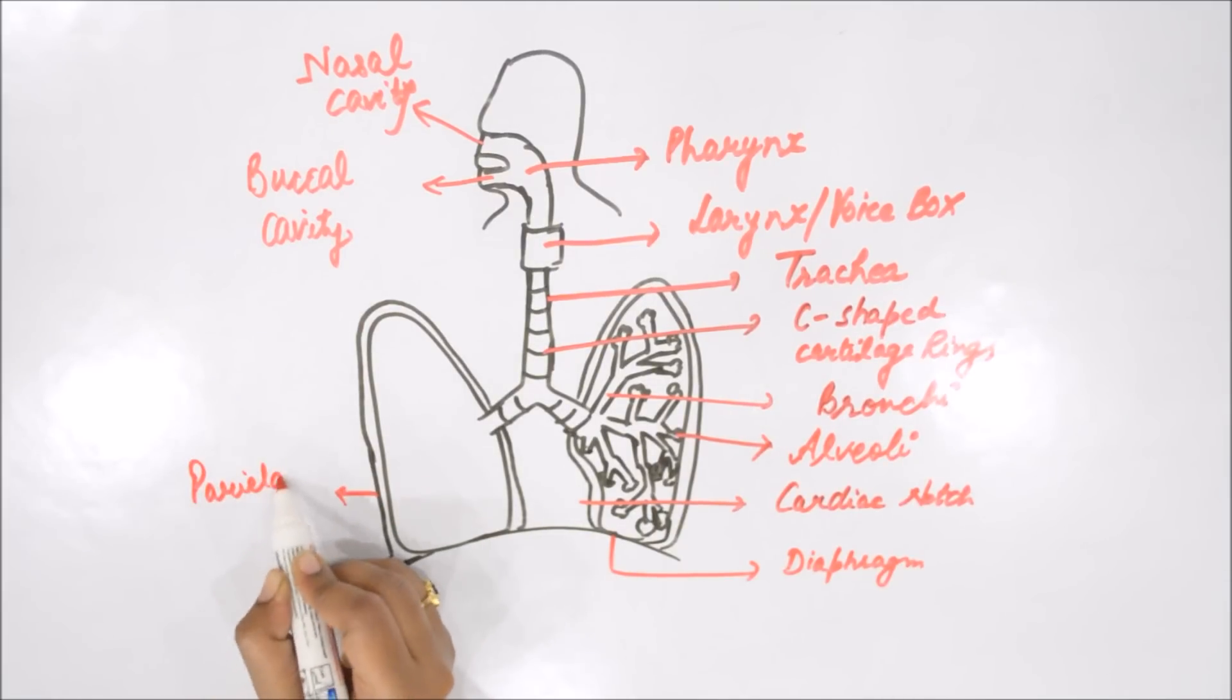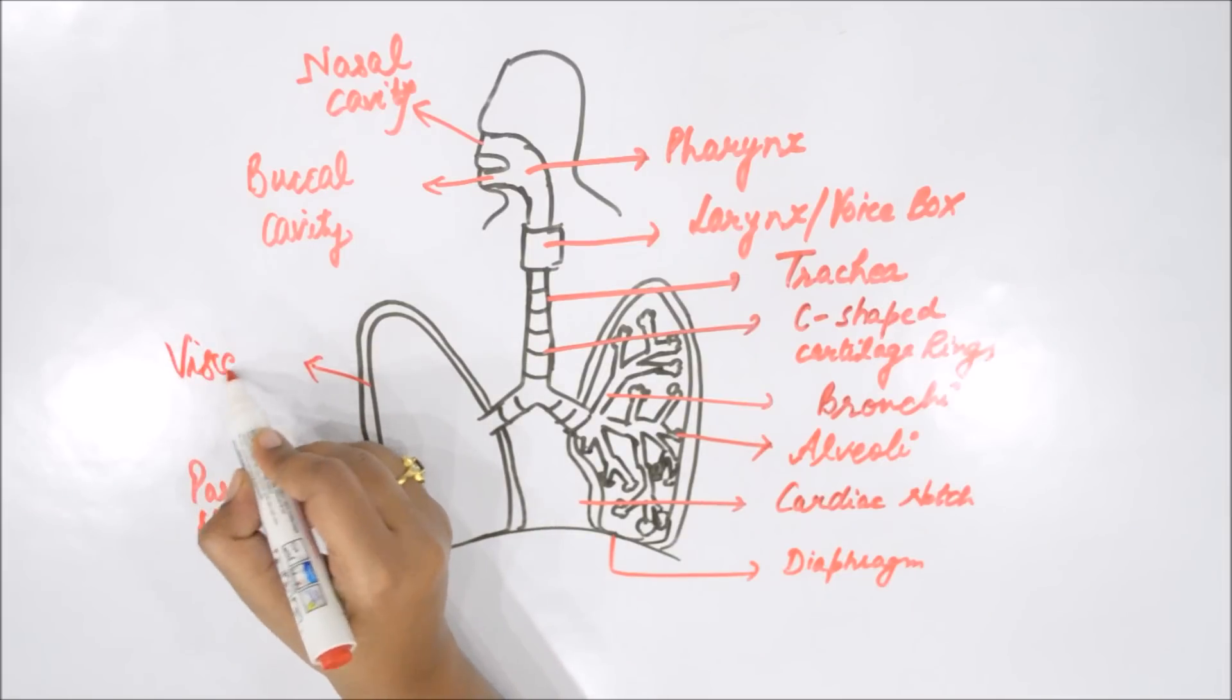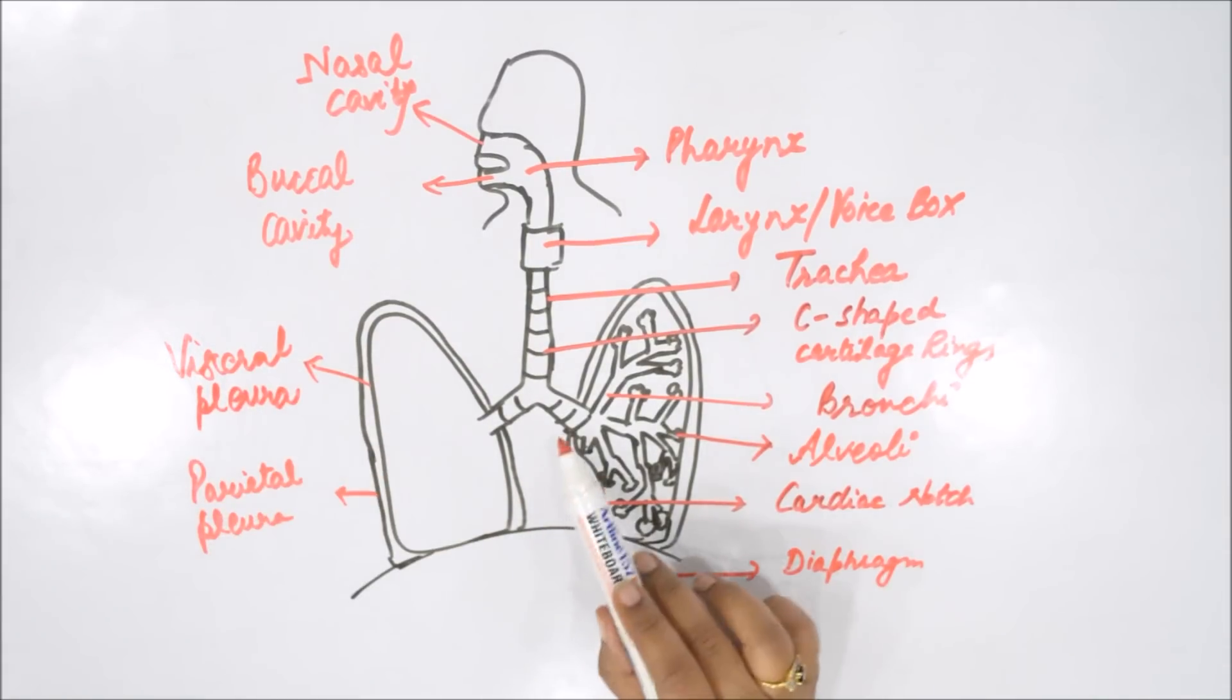Let's see the covering part of lung. Outer one is called parietal pleura. Inner one is called visceral pleura. In between these pleura we have pleural cavity filled with pleural fluid. This is the bronchial tree to increase the surface area for the exchange of gases.